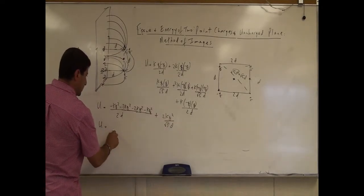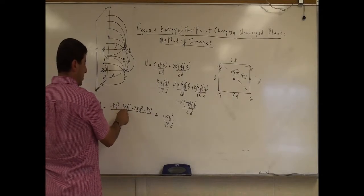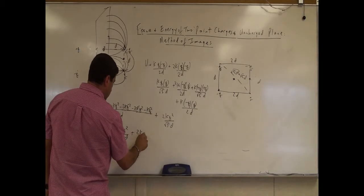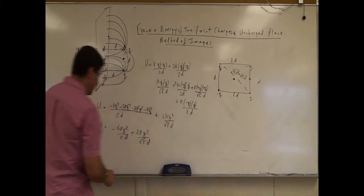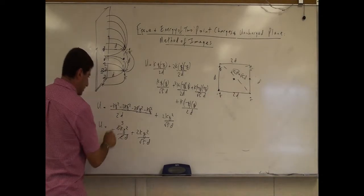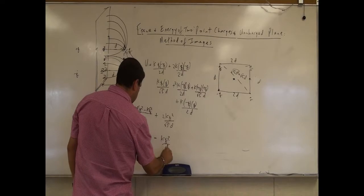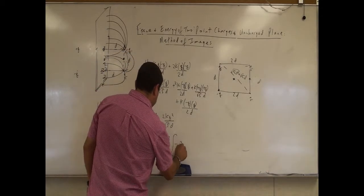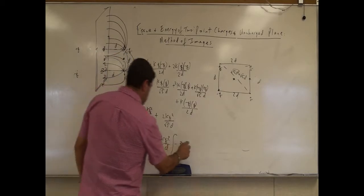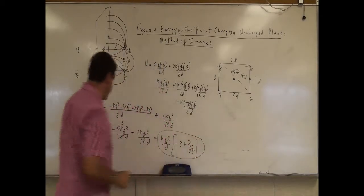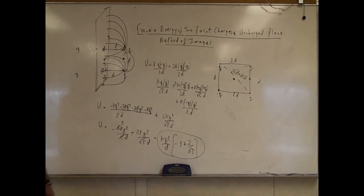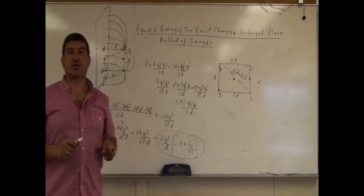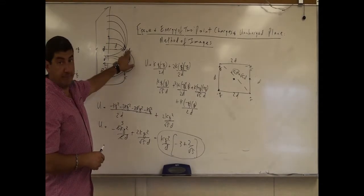Adding all of that up, the potential energy is going to be negative 6Kq² over 2d plus 2Kq² over square root of 5d. This simplifies to Kq²/d times (negative 3 plus 2 over square root of 5). Since negative 3 dominates over 2/√5, the total potential energy of the system is negative.